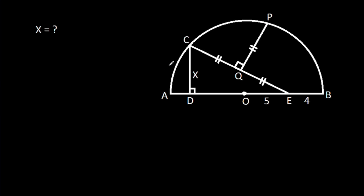In this video, we have been given a semicircle with center O. CD is perpendicular on AB, PQ is perpendicular on CE, and CQ is equal to EQ is equal to PQ. OE is 5, BE is 4, and CD is X.